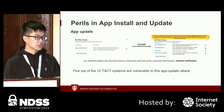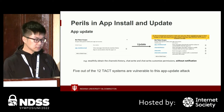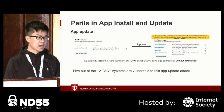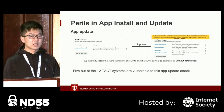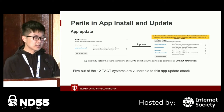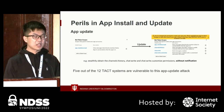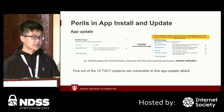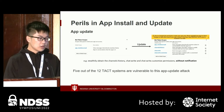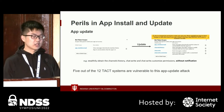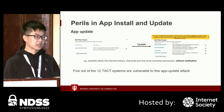For example, the adversary can bypass protections in some team chat systems by installing a team chat app with harmless permissions such as app-mentions:read, then later updating it with more sensitive ones such as channels:history and chat:write. Among the 12 team chat systems, five out of 12 are vulnerable to this app update attack.